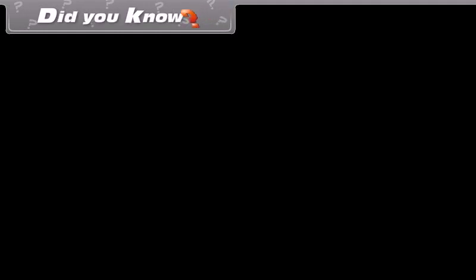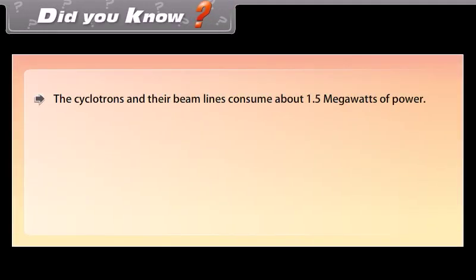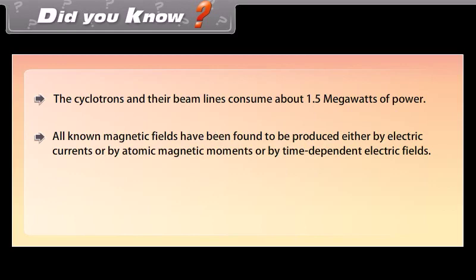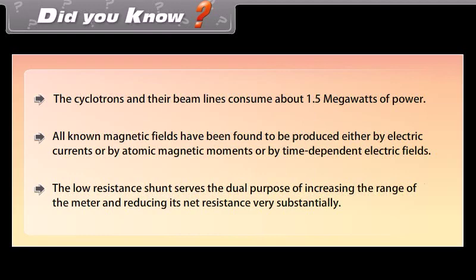Did you know? Cyclotrons and their beam lines consume about 1.5 megawatts of power. All known magnetic fields have been found to be produced either by electric currents, by atomic magnetic moments, or by time-dependent electric fields. The low-resistance shunt serves the dual purpose of increasing the range of the meter and reducing its net resistance very substantially.